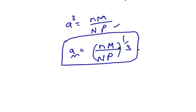Where n is the number of molecules, m is the molecular weight of each molecule, N is Avogadro number and rho is the density.